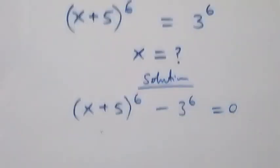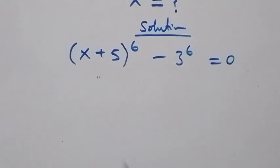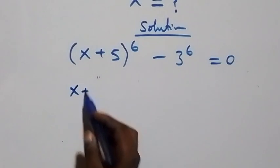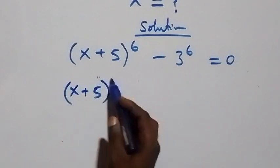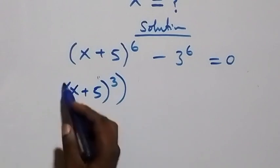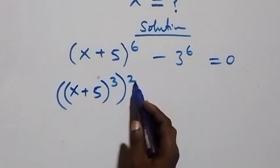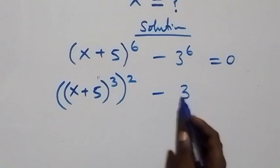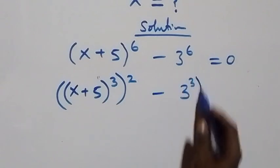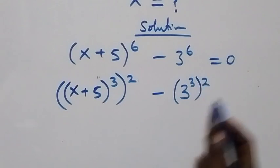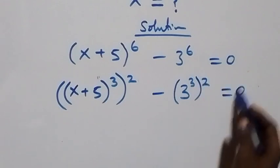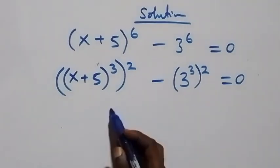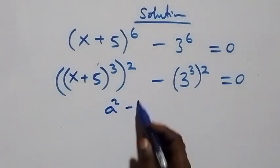From here we can write this as x plus 5, all raised to power 3, then all raised to power 2 — since 2 times 3 gives 6 — then minus 3 raised to power 3, then raised to power 2, which equals 0. This follows the form a squared minus b squared.